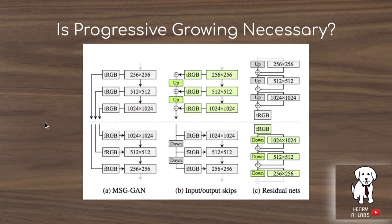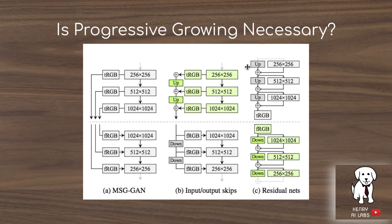In StyleGAN version 2, rather than using the same exact technique of multiscale gradient, they use a ResNet-style architecture with two different schemes: an input-output skip and a residual network type of architecture. In the skip connection case, you take the intermediate 256x256 feature maps at a stage of the generator, convert it to RGB via a 1x1 convolution, then sum and upsample to the next level. The difference between these two approaches is actually quite subtle.